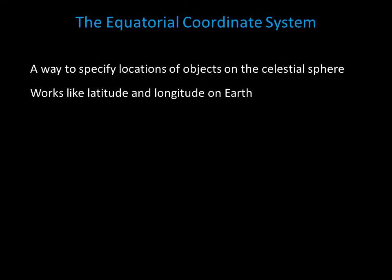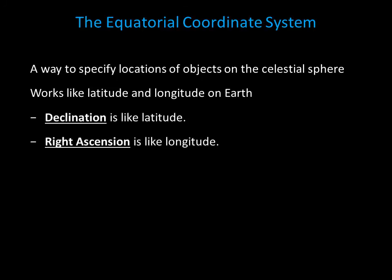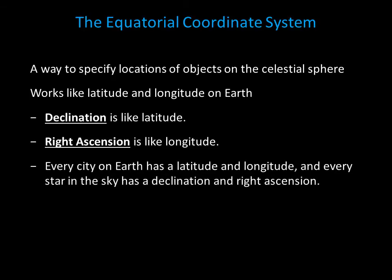The celestial sphere has a similar coordinate system called the equatorial system. Instead of latitude and longitude, the equatorial system uses declination and right ascension. On the celestial sphere, the coordinate analogous to latitude is declination, and right ascension is similar to longitude in that it measures the east-west position on the celestial sphere. Just like every city on Earth has a latitude and longitude, every star in the sky has a declination and right ascension.